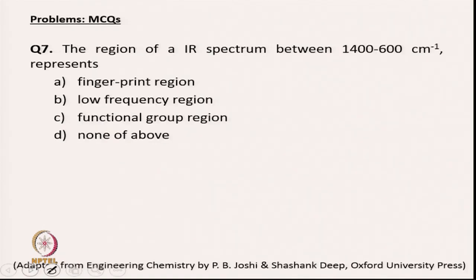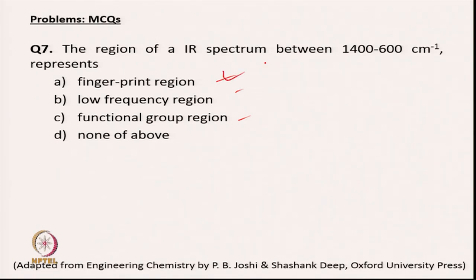The next question asks about the IR spectrum: the region between 1400 to 600 cm⁻¹ represents the fingerprint region. This is a very important region if you want to obtain structural features of a molecule using IR spectroscopy.